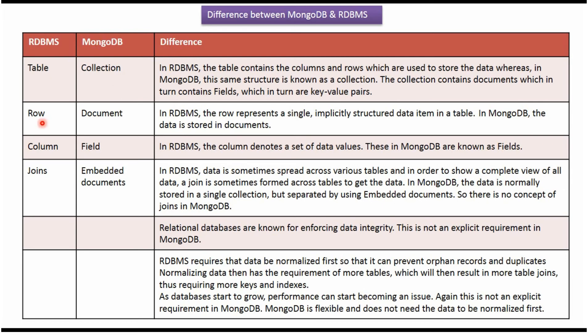In RDBMS, the row represents a single data item in the table. A row is equivalent to a document in MongoDB, and the data is stored in the document.